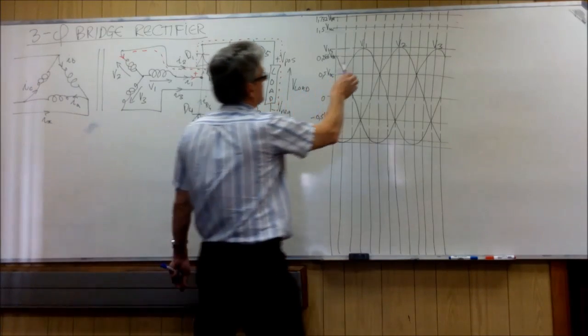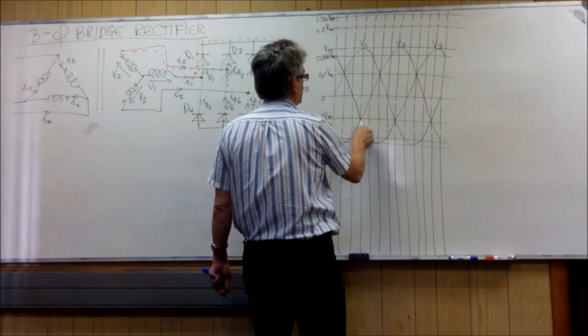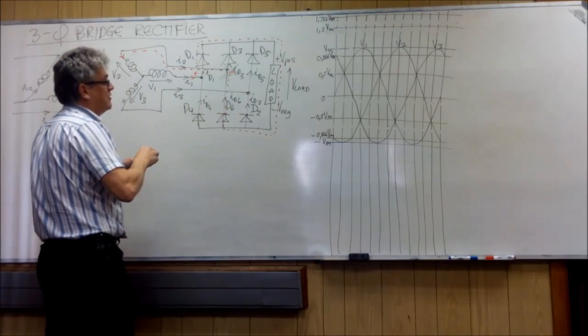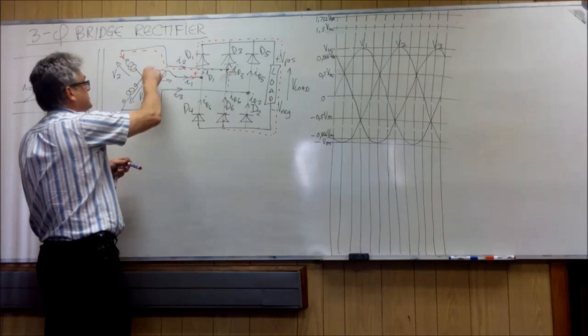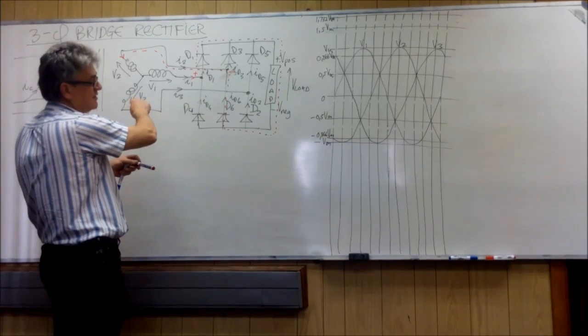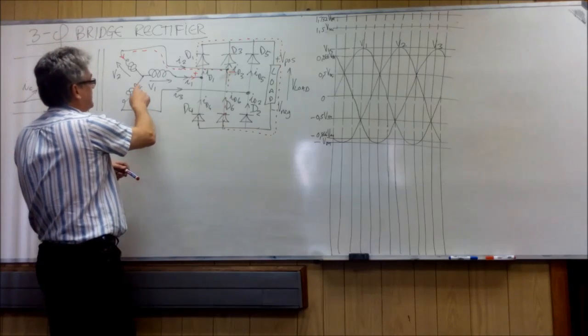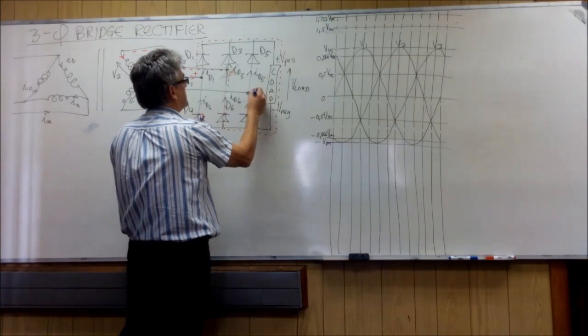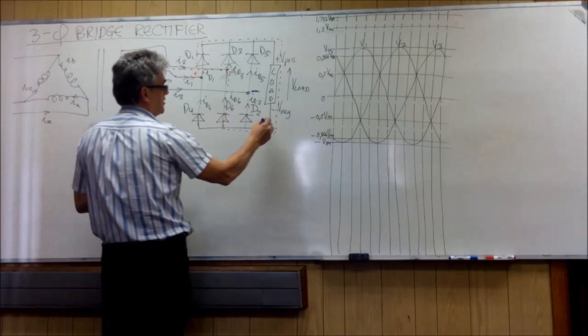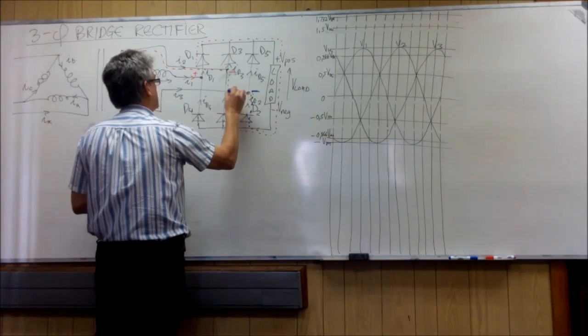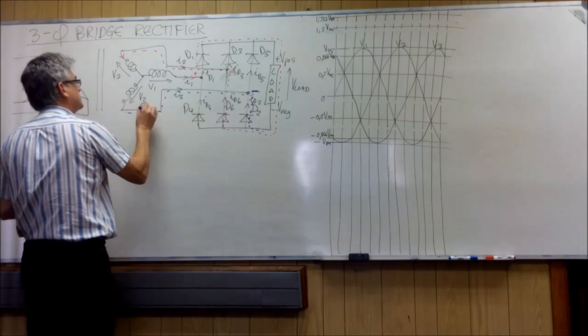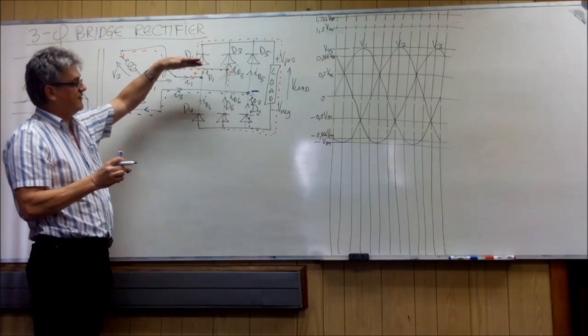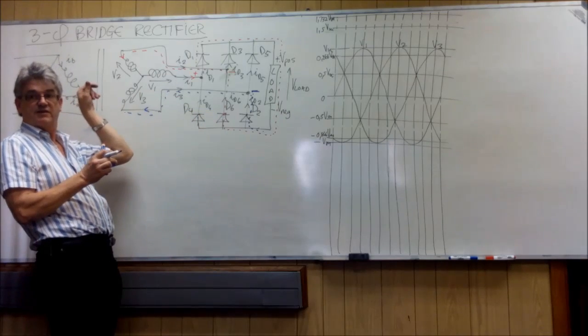Then the next point that we have to look at is when v3 becomes the most negative. Then it changes from this point here when v2 is the most negative but now v3 is the most negative. So the current now will switch from this red one here to the blue one. So you will always have one phase feeding, another phase receiving.